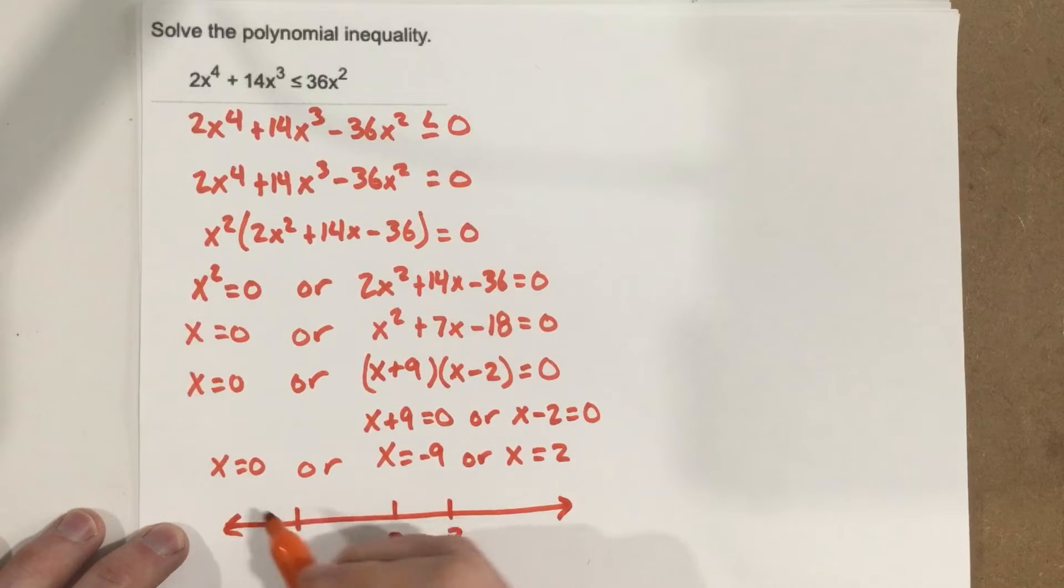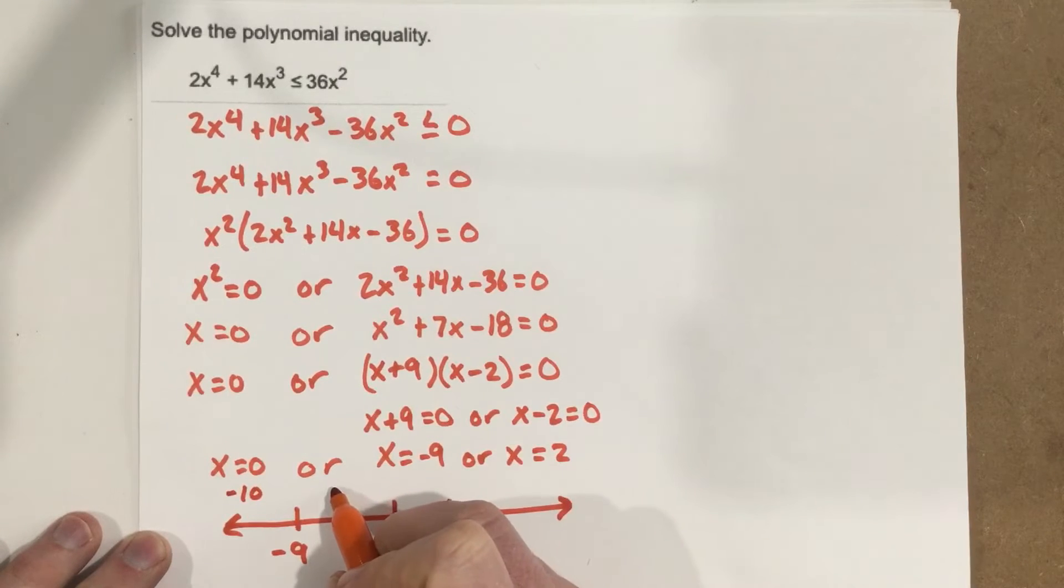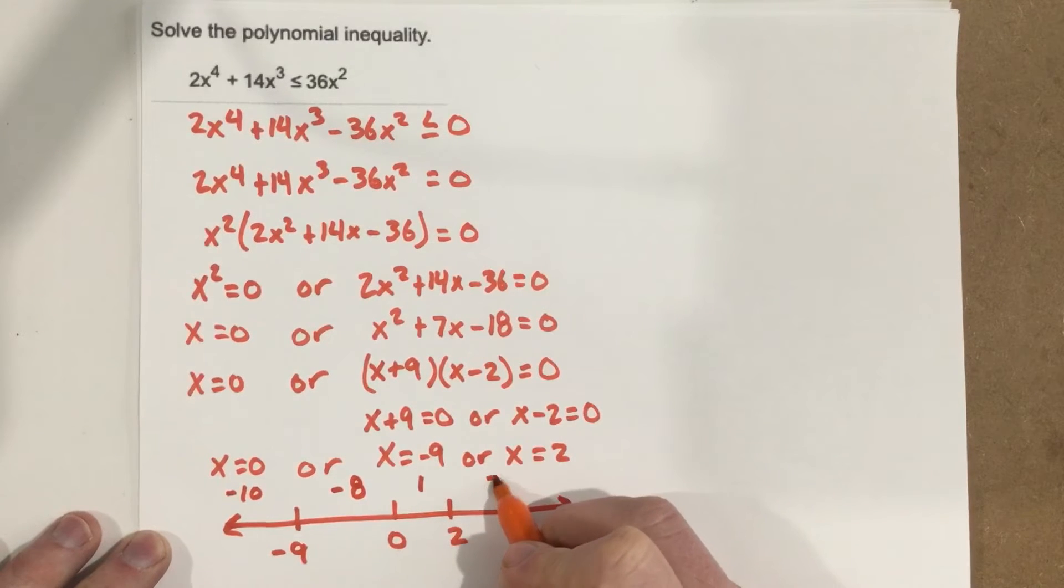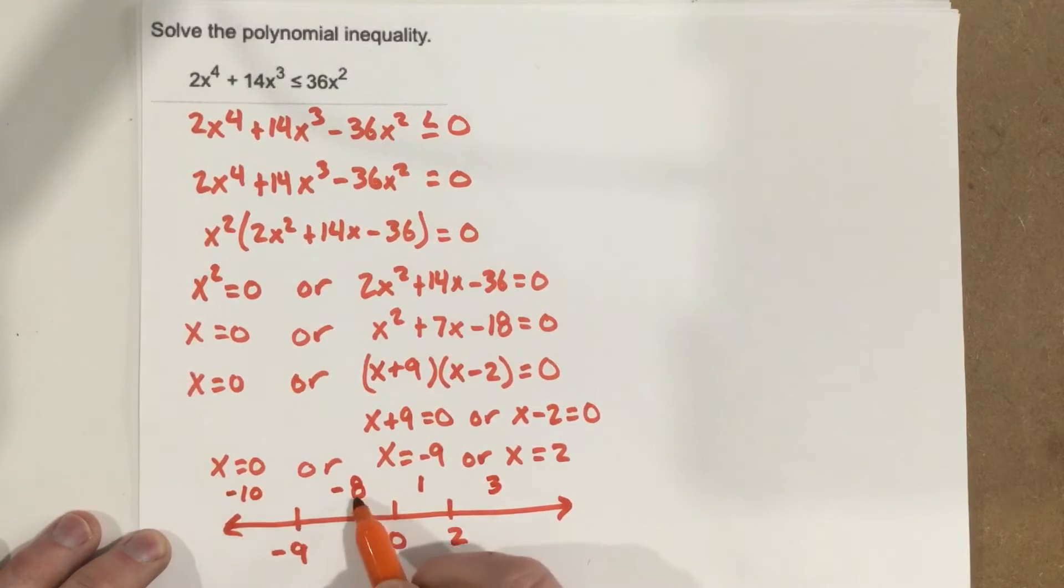Well, I pick numbers to the left of negative 9. So let's say I pick negative 10. I pick numbers between negative 9 and 0. Let's pick negative 8. And then let's use 1 between 0 and 2. And let's use 3 out here. So I'm going to check each of these numbers. Now the easiest way to do this is to use your calculator.